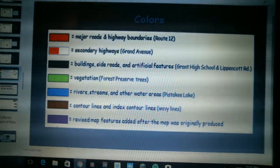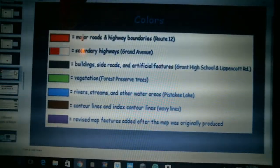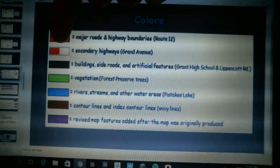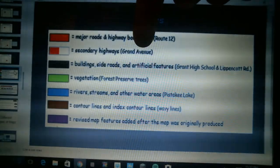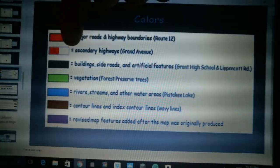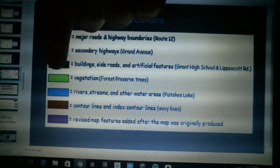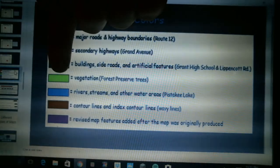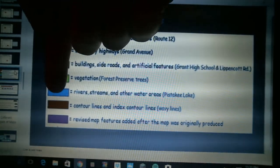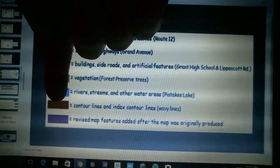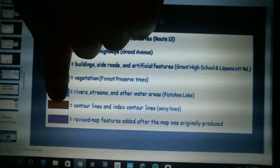Okay, all standard USGS maps have the same color scheme. Red is for major roads and highways like highway 12, highway 59, that kind of a thing, state roads. Roads that are alternating red and white are secondary highways like Grand Avenue, Monteville Road, that kind of a thing. It's red white and they'll be red white red white red white over and over. Black is for buildings, side roads, artificial features. Green is for vegetation, areas of forest preserve and that kind of stuff or farm fields. Blue is for rivers, streams, and other water areas. Brown is for contour lines and index contour lines.